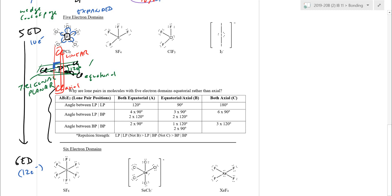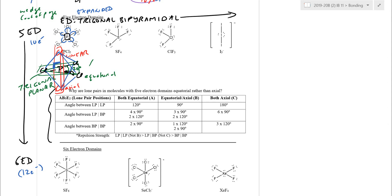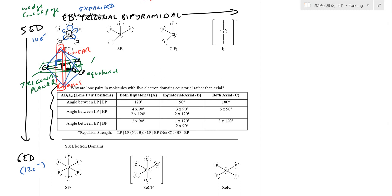The electron domain geometry for all five-domain cases is trigonal bipyramidal — triangular in the middle with two pyramids, one on top and one on the bottom. For PCl5, with chlorines at all five positions, the molecular geometry is also trigonal bipyramidal. When atoms start becoming lone pairs, the molecular geometry changes. The key rule: it's always best to remove from the equatorial positions first.